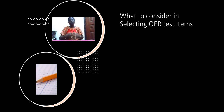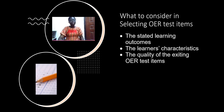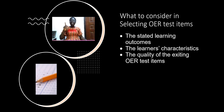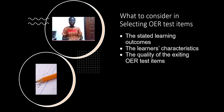What to consider in selecting OER tests: state the learning outcome — it's very important. Consider the learner's characteristics — very important. Look at the quality of the existing test item before you select. When looking at learner characteristics, what you might use for ages 40 and above might be different from what you need for ages 10 to 12.